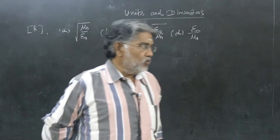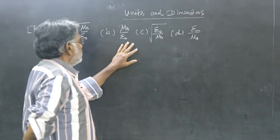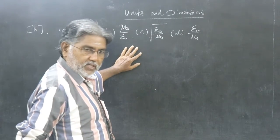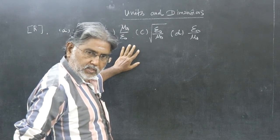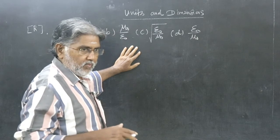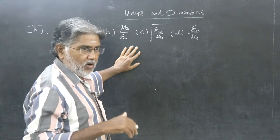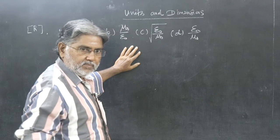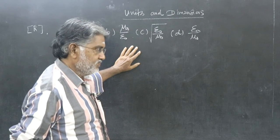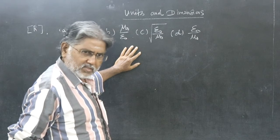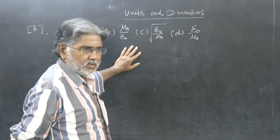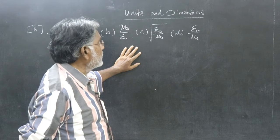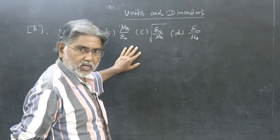Means, you will have to know the dimension for epsilon naught, dimension for mu naught, raise it to power x, then raise it to power y, and then right side you write the dimension of R, then find the value of x and y and we will have to solve. That's the usual method. Even one of the earlier videos we have done like that.